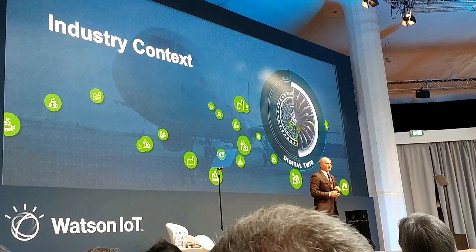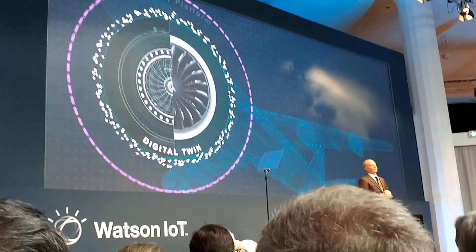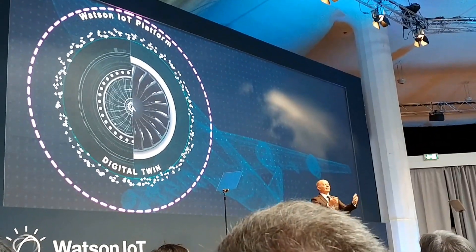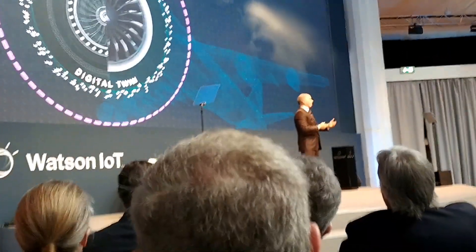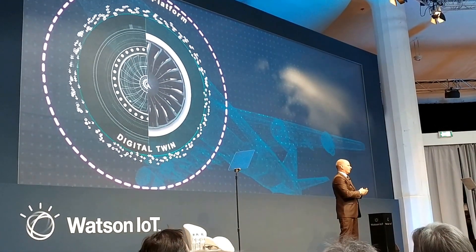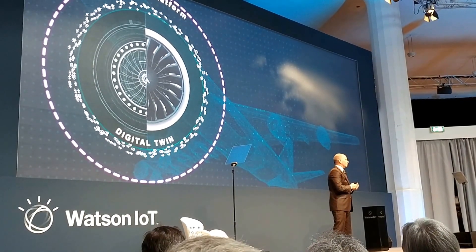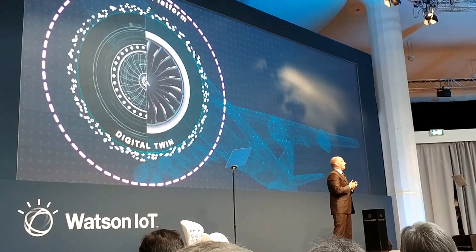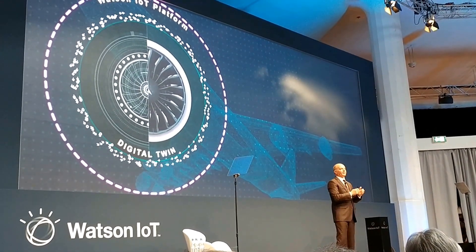At IBM, we start with the Watson IoT platform, which is where we bring the data in. We connect to a variety of different data sources — direct devices, engineering capabilities, partner data such as Eris from the physical side, and logical data from our own portfolio. Around the IoT platform, we start to build context around the relationships of the information, both over time and in relation to each other.